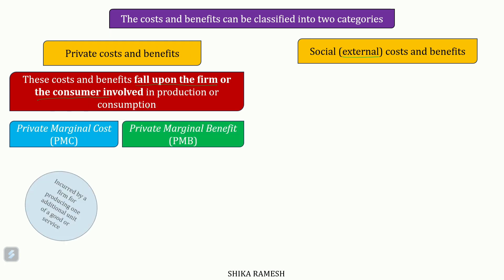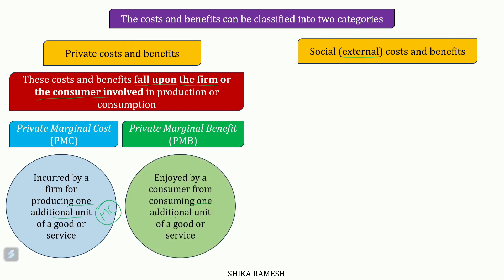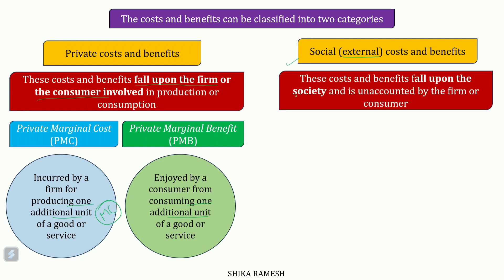Private marginal cost is incurred by a firm for producing one additional unit of a good or service — it is essentially the usual marginal cost we see in the theory of production. Private marginal benefit is enjoyed by a consumer from the consumption of an additional unit of a good or service. Social or external costs and benefits, on the other hand, fall upon the society as a whole and are not accounted for by the individual consumer or firm involved in the transaction — these costs are nothing but the externalities.